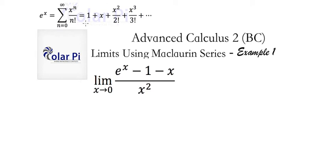e to the x is equal to the infinite sum here on the right side: one plus x plus x squared over two factorial plus x cubed over three factorial plus dot dot dot. You get it.